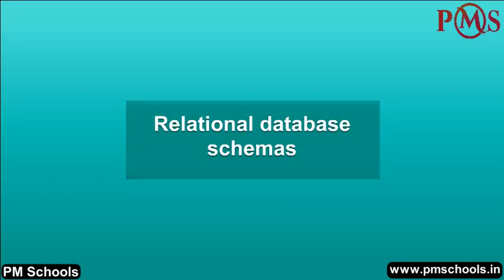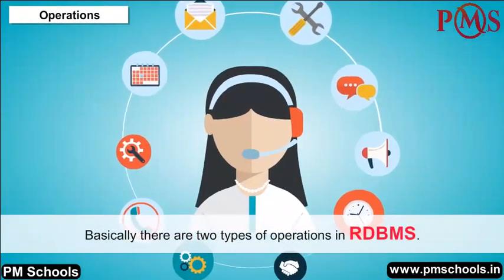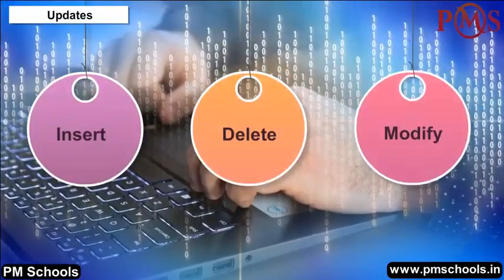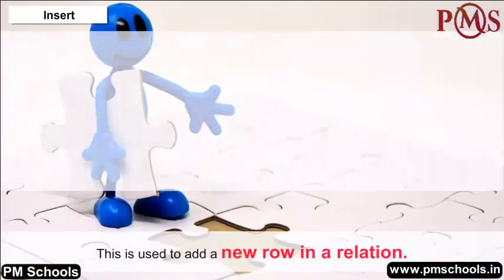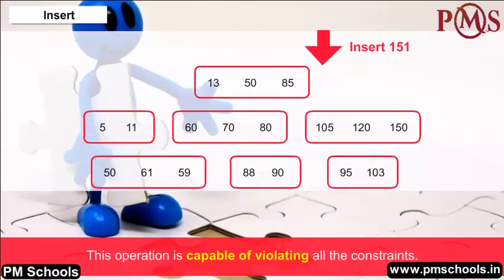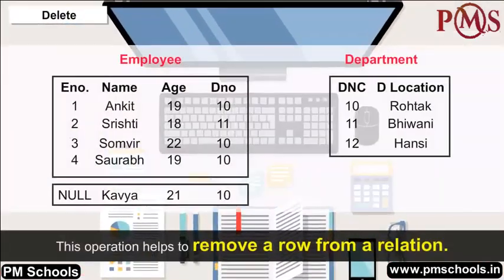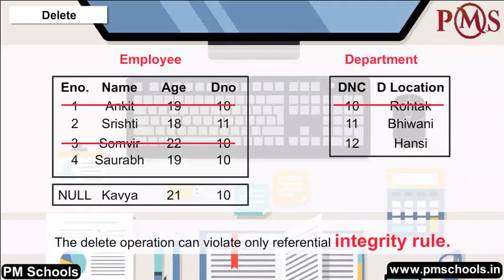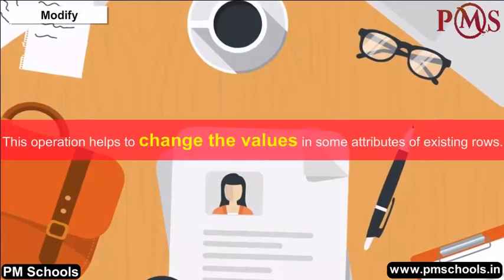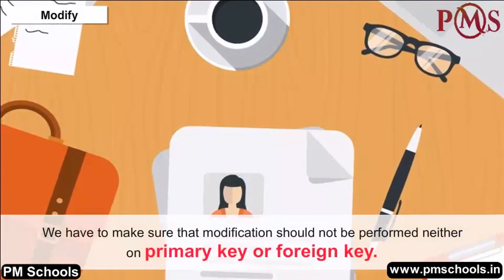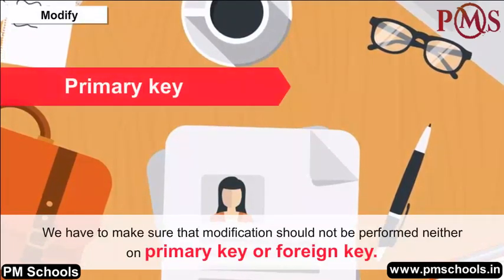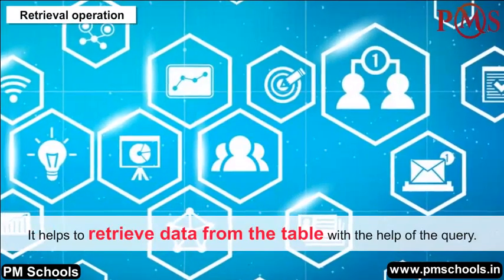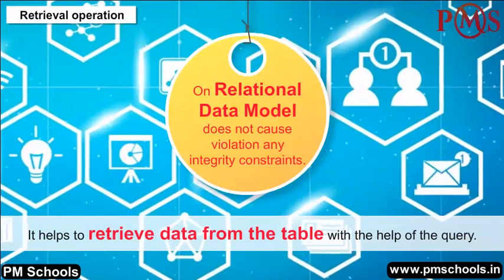Operations in RDBMS: There are two types — Updates and Retrieval. Updates include: Insert, which adds a new row and can violate all constraints; Delete, which removes a row and can violate referential integrity; and Modify, which changes values in existing rows — modification should not be performed on primary key or foreign key. Retrieval operation helps to retrieve data from the table with the help of a query, and on a relational data model does not cause violation of any integrity constraints.